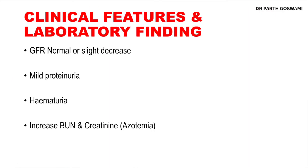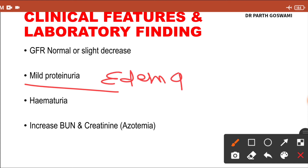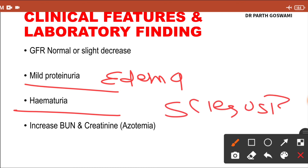Regarding clinical features and laboratory findings in nephrosclerosis: first, because of endothelial damage, protein will leak into the urine, so the patient can have mild proteinuria. Because of reduced oncotic pressure, the patient can develop edema. Due to endothelial damage, there could also be blood in the urine, so the patient can have hematuria. In the advanced stage, there is sclerosis of the glomerulus.